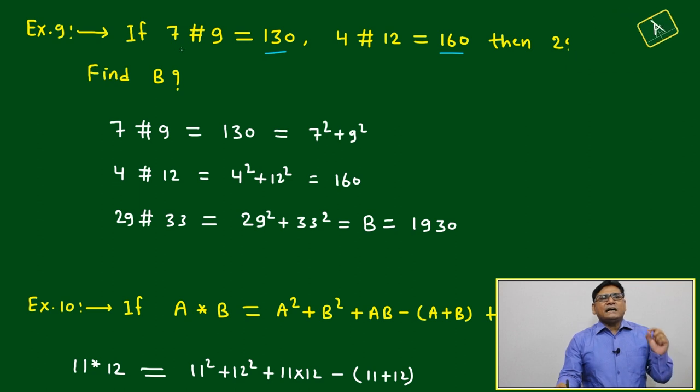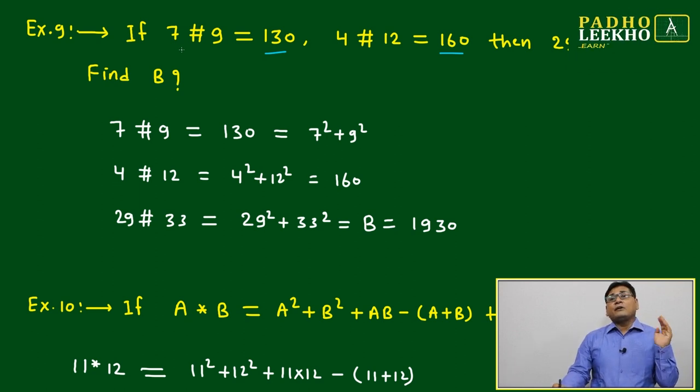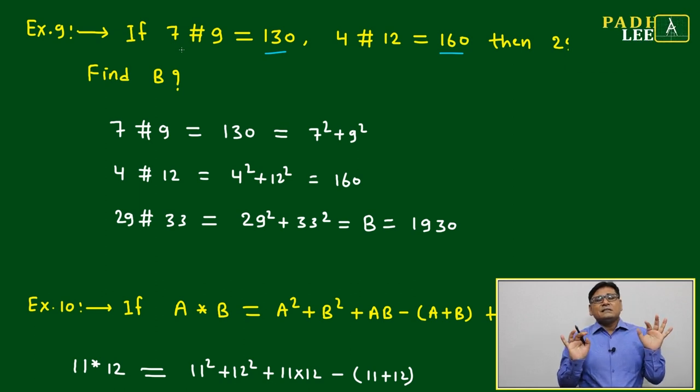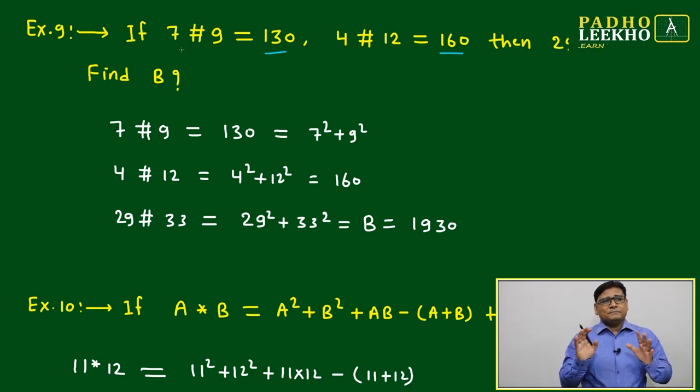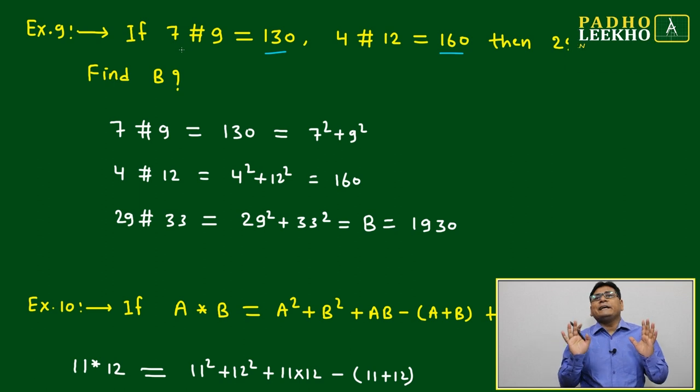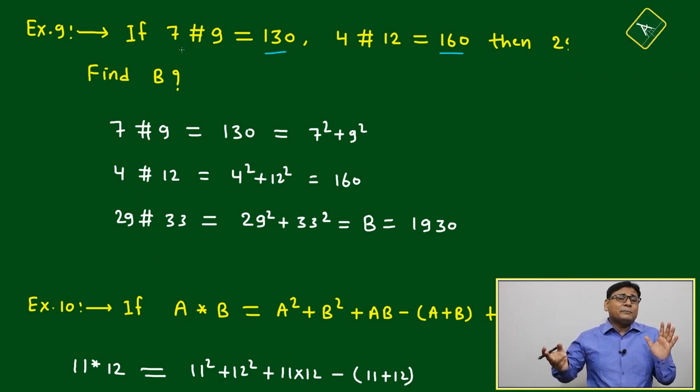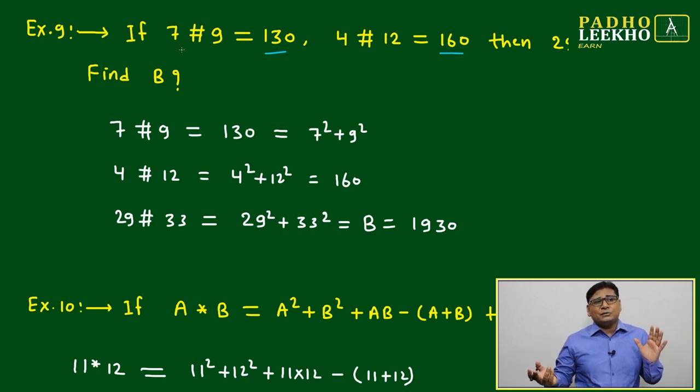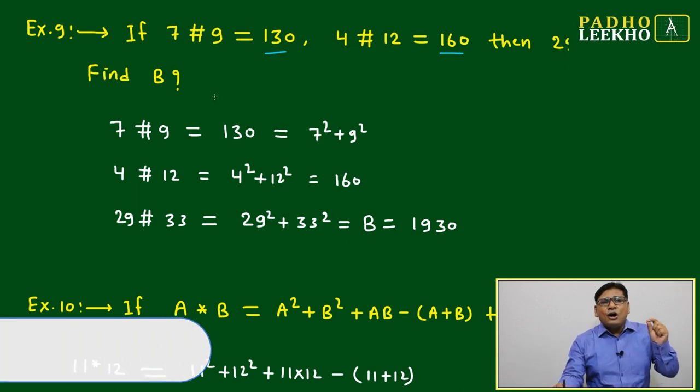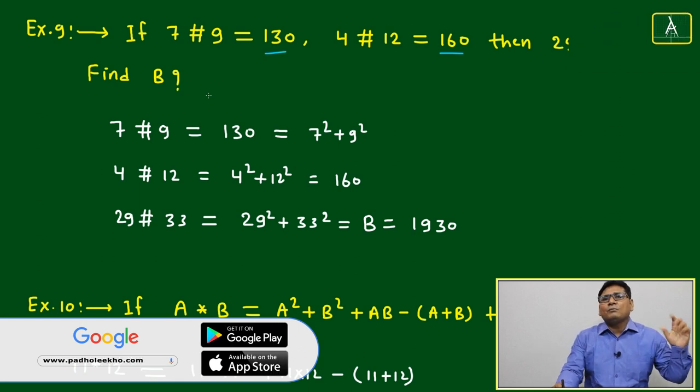We'll try to figure out: a single digit number cannot produce a three digit number by addition or subtraction. Single digit numbers cannot produce three digit numbers by multiplication. Maximum, you can multiply 9 into 9, it will be 81. 81 plus 81 can make a three digit number, but 81 itself is only a two digit number. So this number is not related to simple addition or multiplication.